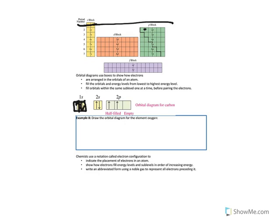Next we come back to level 2. We have the 2s. Carbon is past the 2s, so the 2s is full. So we write 2s, draw a box, one arrow up, one arrow down to represent this level is full. Carbon is then in the 2p — it is two boxes into the 2p, so it has 2 electrons in the 2p. Since there are only two, we put two arrows, one in each of the first two boxes.